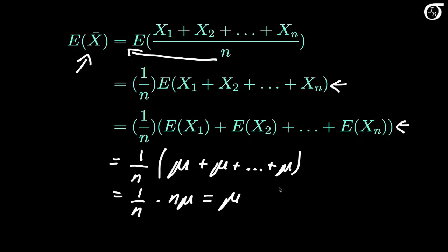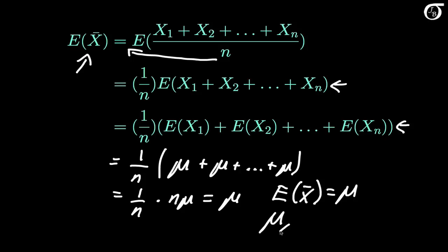So the expectation of the random variable X-bar is equal to mu, the mean of the population from which we are sampling. We sometimes write that as mu sub X-bar — the mean of the sampling distribution of X-bar — equals mu.